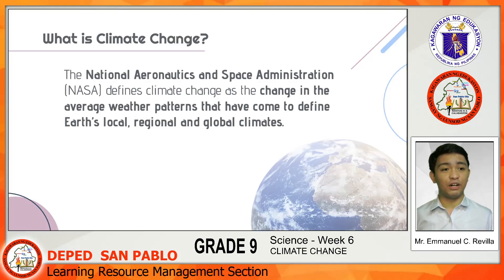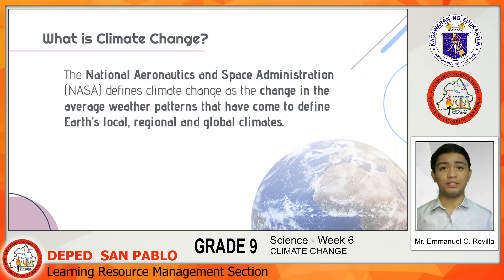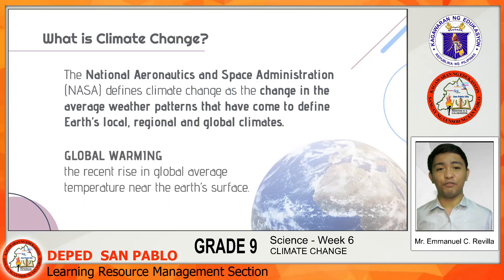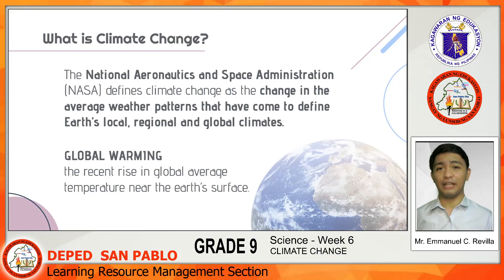Climate change does not refer to the natural weather variability that takes place from day to day. But is it the same as what we call global warming? Although the two terms are usually used interchangeably, they actually refer to two different things. Global warming refers to the recent rise or increase in the global average temperature near the Earth's surface. Global warming is simply one aspect of climate change.